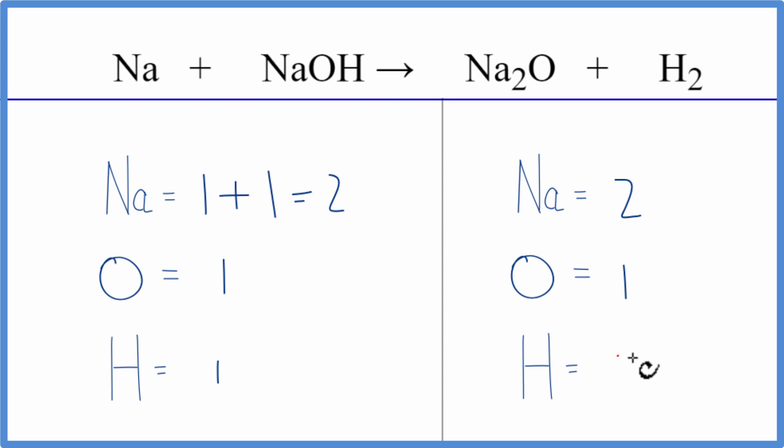So let's start. Everything's the same except the hydrogens. Let's balance the hydrogens by putting a 2 in front of the sodium hydroxide. So we have one hydrogen times 2. This 2 applies to everything here, so one times 2, that'll give us two hydrogens. Those are balanced.